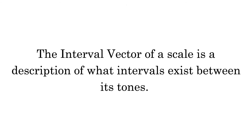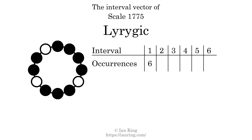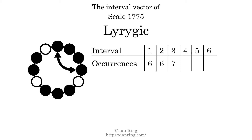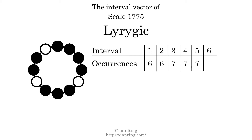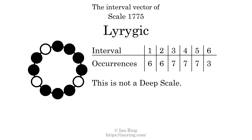The interval vector of a scale is a description of what intervals exist between its tones. There are 6 intervals with the size of 1 semitone. There are 6 intervals with the size of 2 semitones. There are 7 intervals with the size of 3 semitones. There are 7 intervals with the size of 4 semitones. There are 7 intervals with the size of 5 semitones. There are 3 intervals with a size of 6 semitones. Each interval does not appear in this scale a unique number of times, so this is not a deep scale.